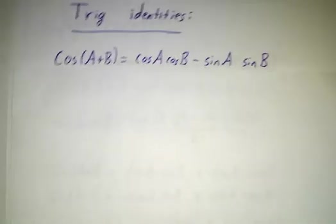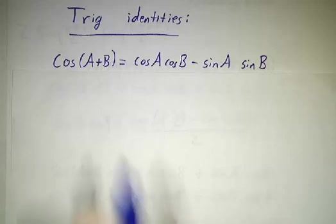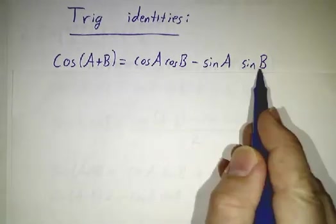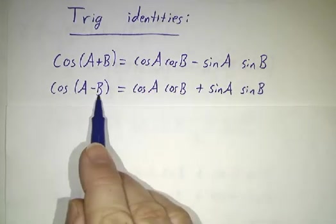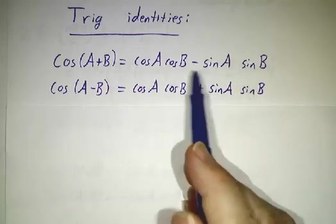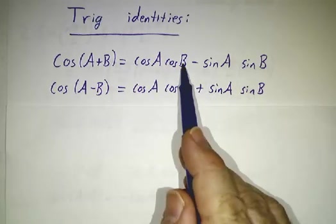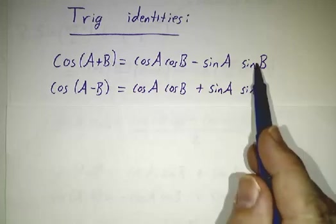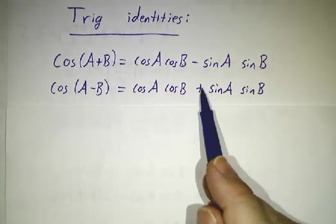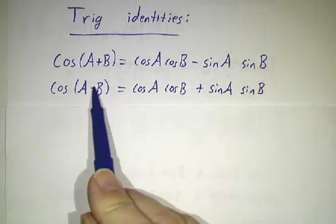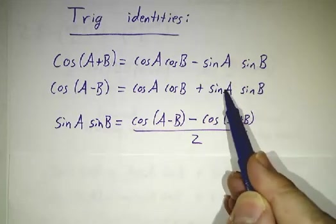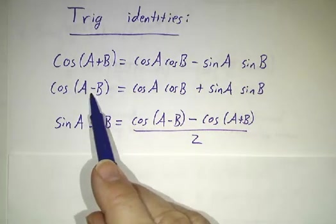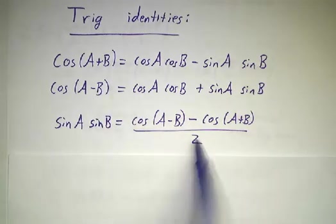So here are the trig identities. The first trig identity is the addition of angle formula. Cos of a plus b is cos a cos b minus sin a sin b. Likewise, cos of a minus b is the same thing only with b replaced by minus b. Cos of minus b is cos of b, sin of minus b is minus sin of b. So the end result is we get a plus sign. But now if you take this equation minus this equation and divide by 2, we get that sin of a sin of b is cos of a minus b minus cos of a plus b divided by 2.